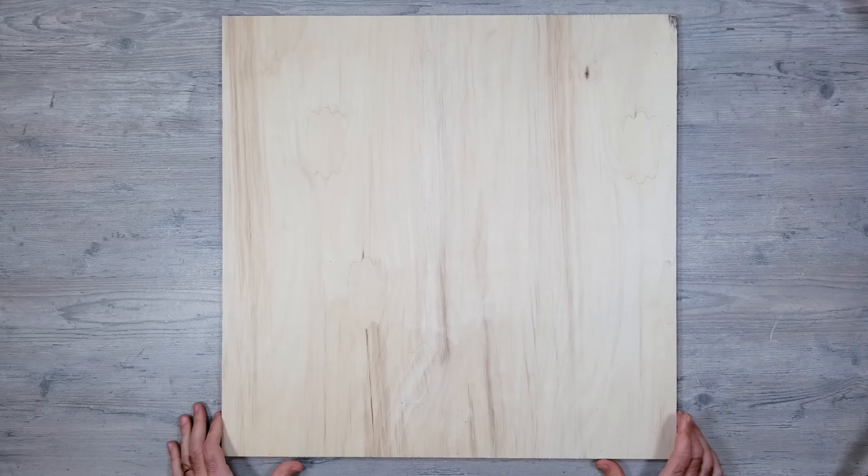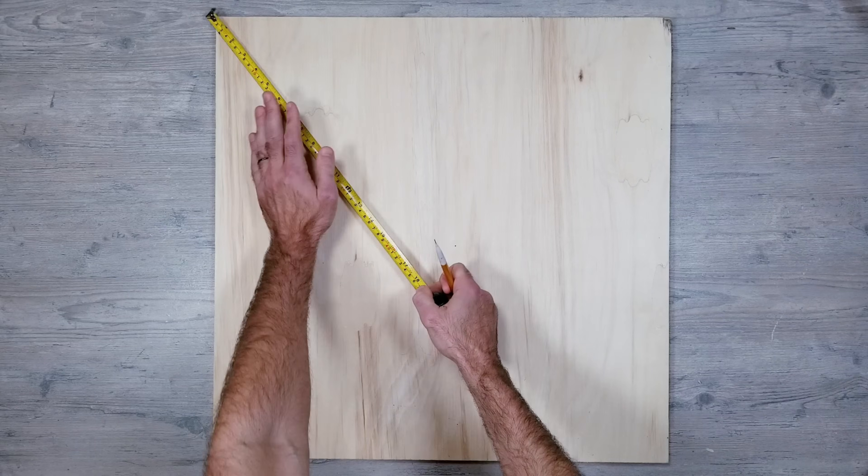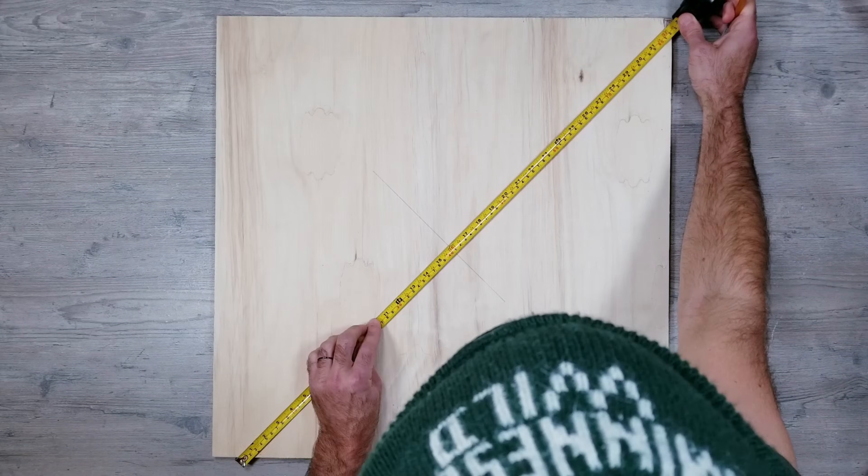Getting started, the first thing I did was buy a piece of plywood that's two feet by two feet. I then took a tape measure and went corner to corner on both sides to find the center point of the board.